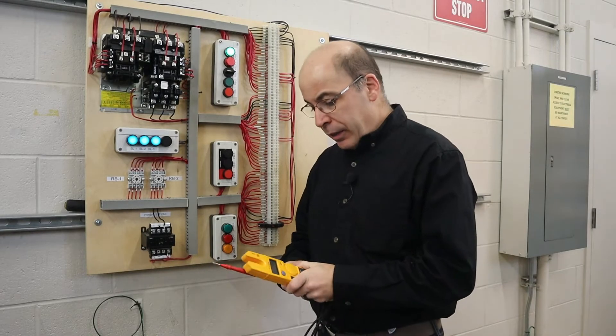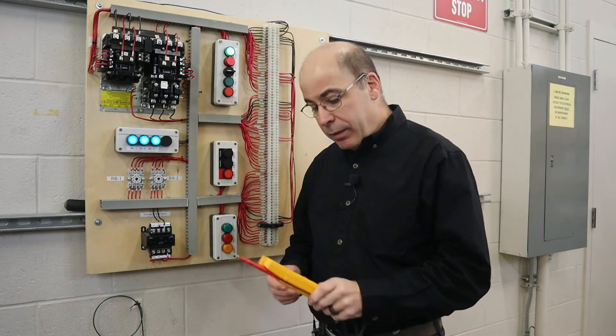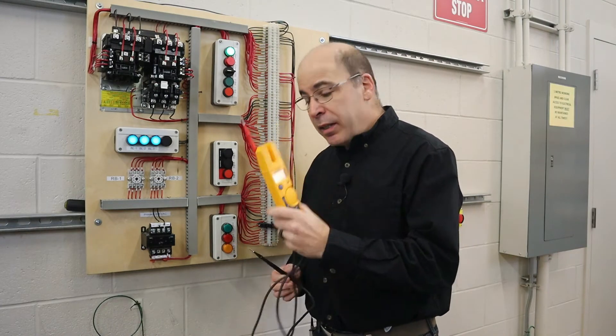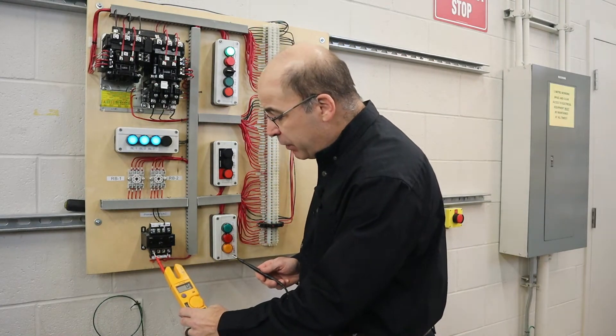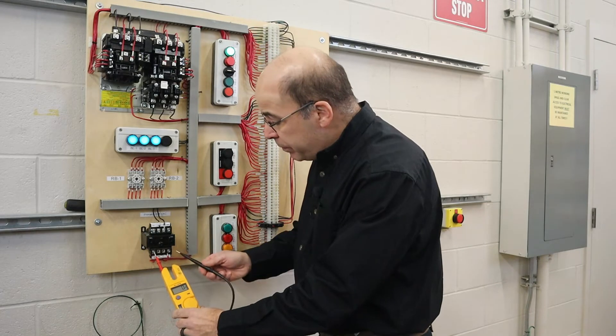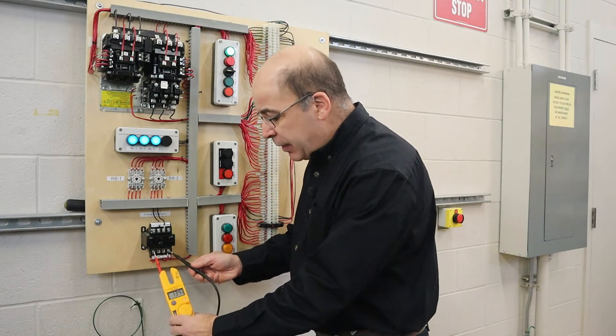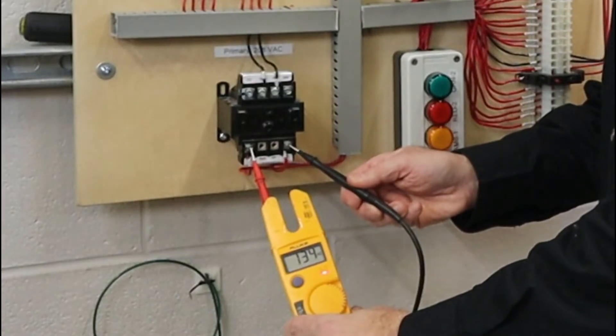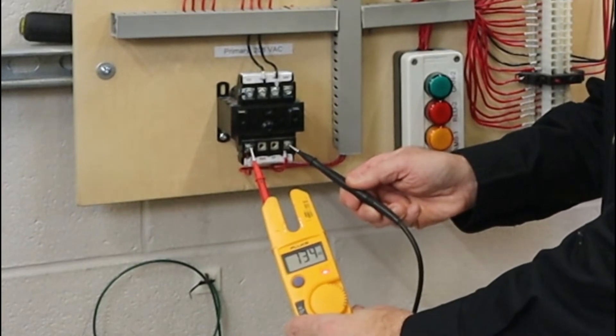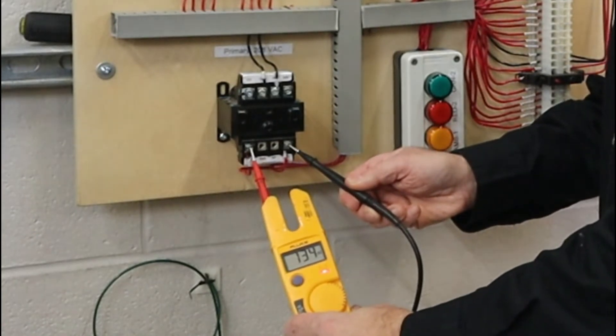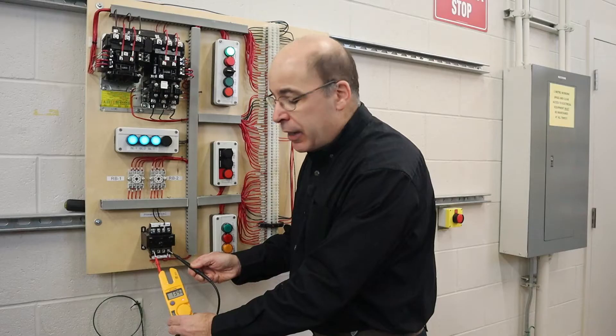Now what we are going to do is we're going to take some measurements and we're going to try and explain the whole concept. Now in order to do this properly, we're going to take the digital multimeter. I'm going to reference X2 to X1 on the secondary. Now what we can see—and I'm not sure if the camera can pick it up—but it is reading 134 volts. Now this is correct.